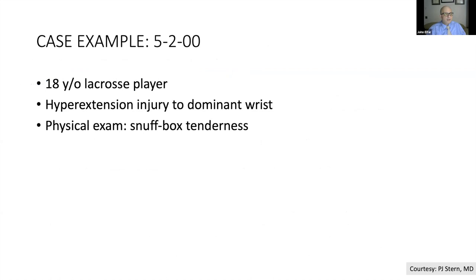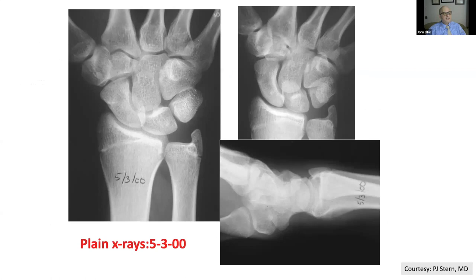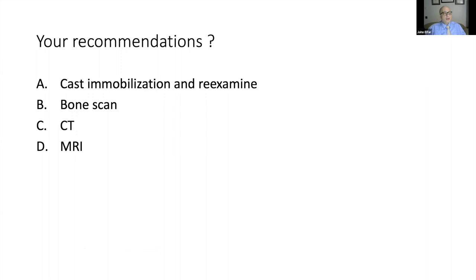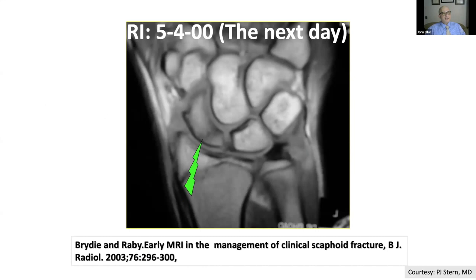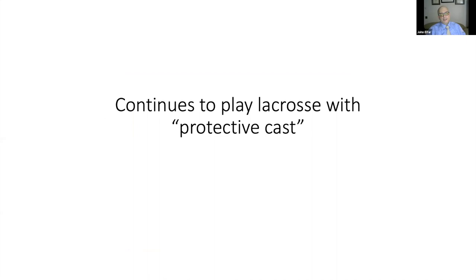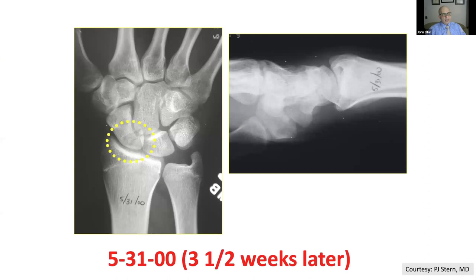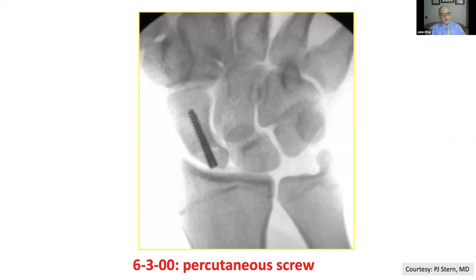A case example: an 18-year-old lacrosse player with hyperextension injury. Looking at the x-rays, it would be hard to find a scaphoid fracture. Most of us would cast, immobilize, and reexamine; some would get bone scans, CT scans, or MRIs. This patient got an MRI the very next day, which showed a scaphoid fracture on T1-weighted imaging. The patient continued to play lacrosse in a protective cast. About a month later, a screw was placed — a perfectly appropriate antegrade screw for a proximal fracture — and it went on to heal uneventfully.